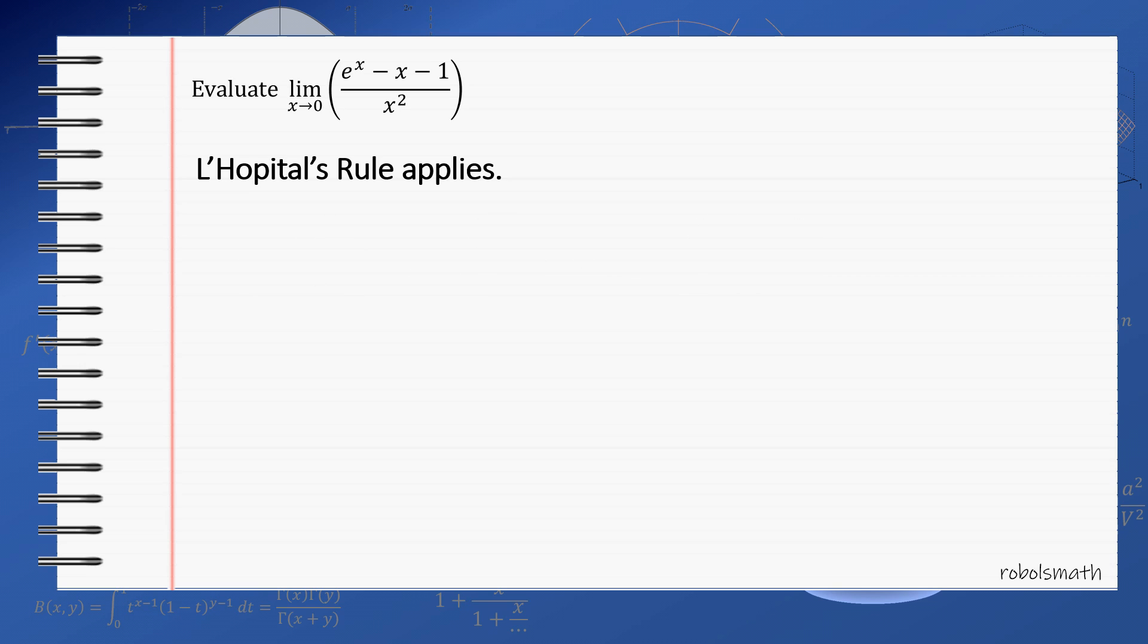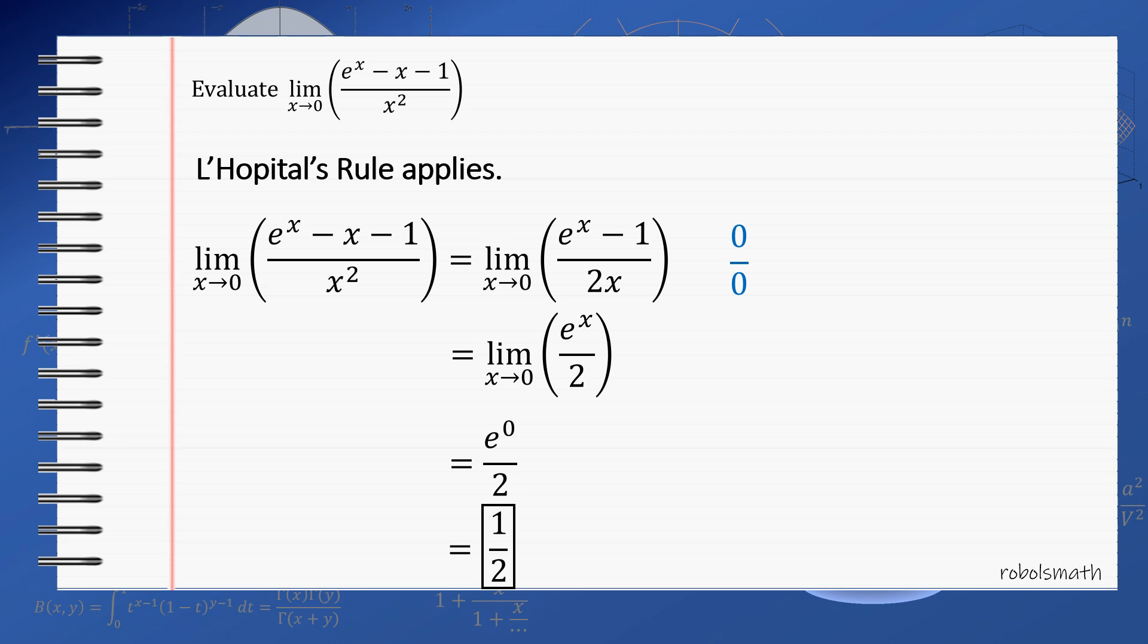Hence, the limit of the given expression is equal to the limit of e to the x minus 1 all over 2x as x approaches 0. Note that e to the x minus 1 is the derivative of the numerator while 2x is the derivative of the denominator x squared. Again, if we try to evaluate this as x equals 0, we get 0 over 0 again. So L'Hôpital's rule can be applied once more. Taking the derivatives of the numerator and the denominator gives us e to the x over 2. As x approaches 0, this expression approaches e to the 0 over 2 which simplifies to 1 half.